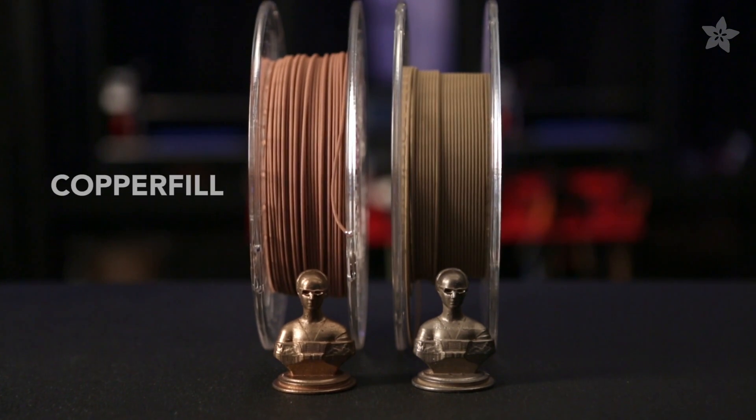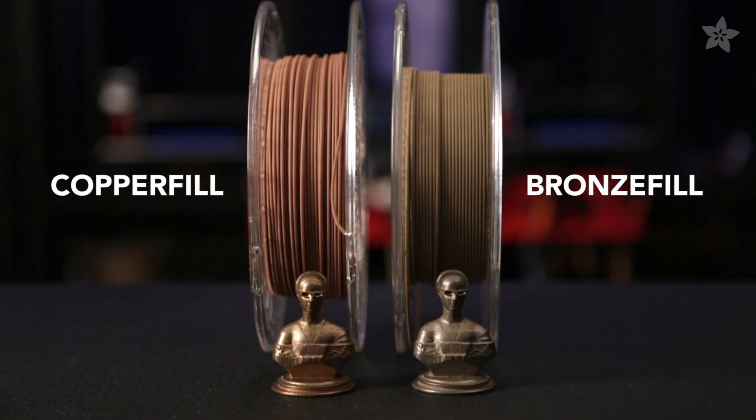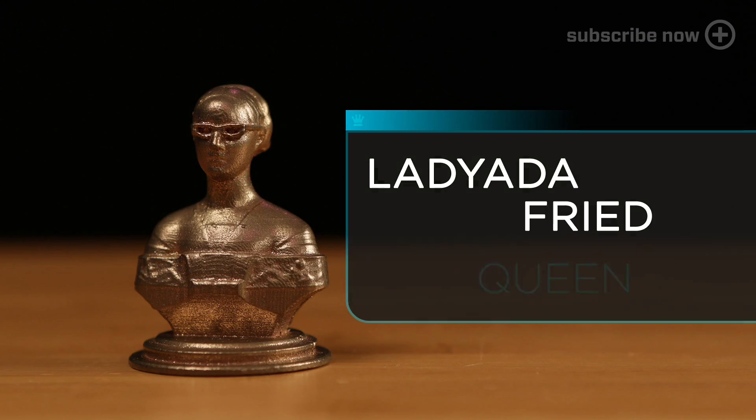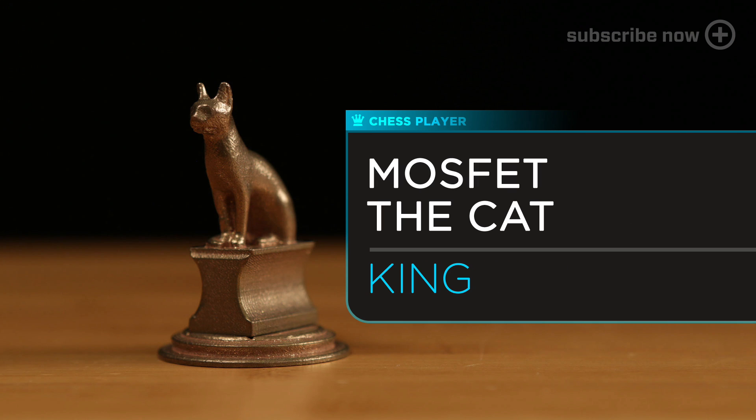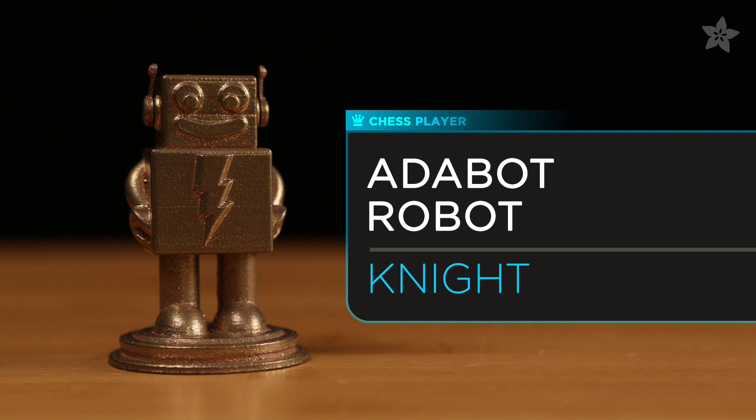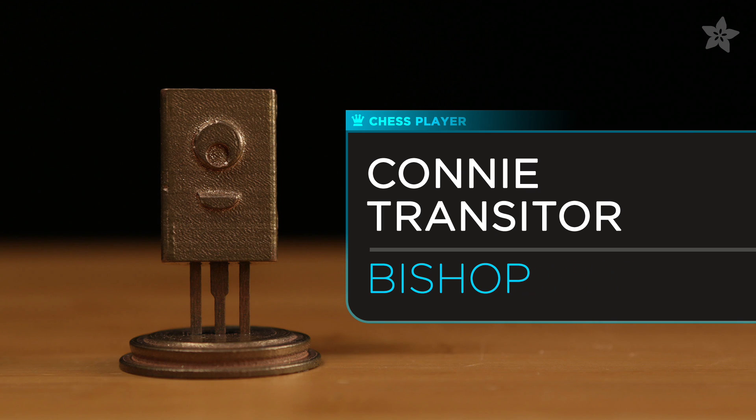First, let's take a look at the chess players. First up we have Lady Ada featured as the Queen, MOSFET the King, Kitty, Adabot serving as the brave and shiny knight, Connie the transistor as Bishop.